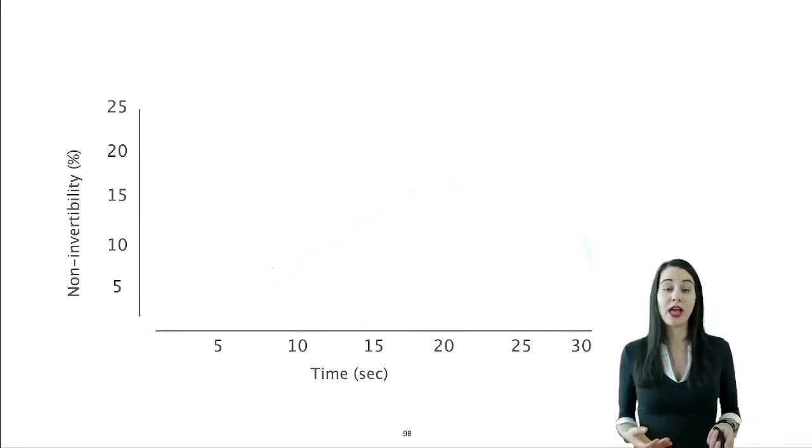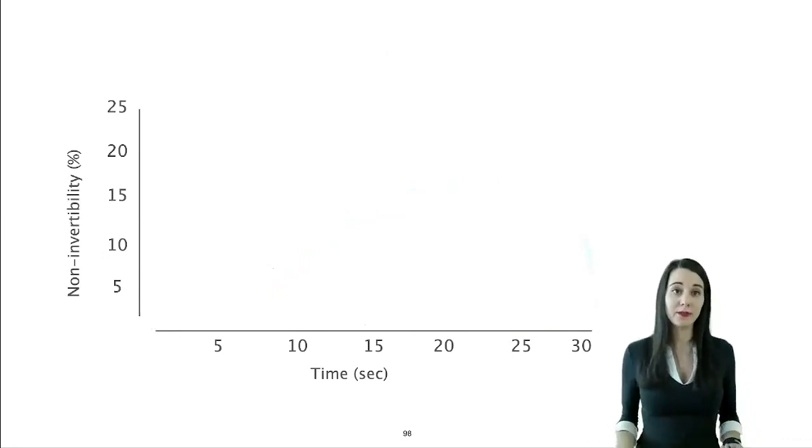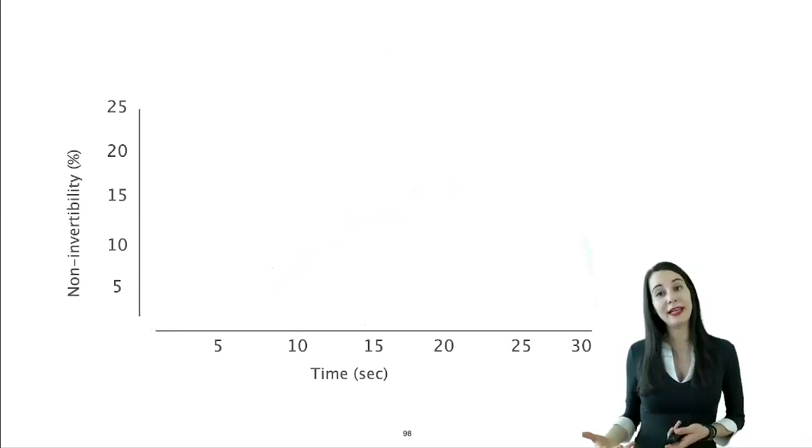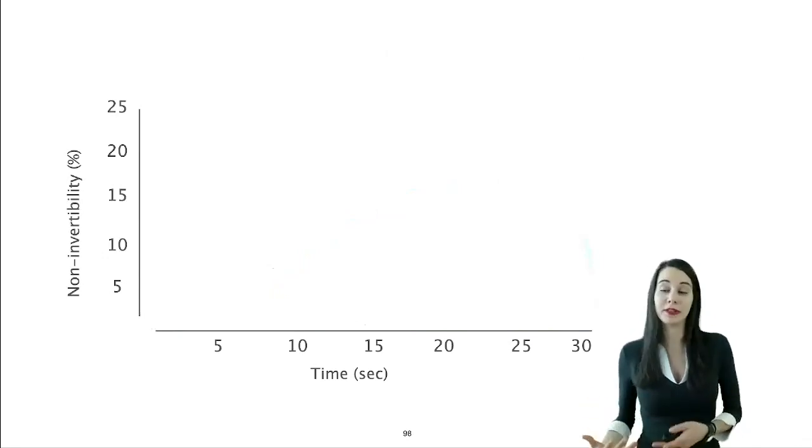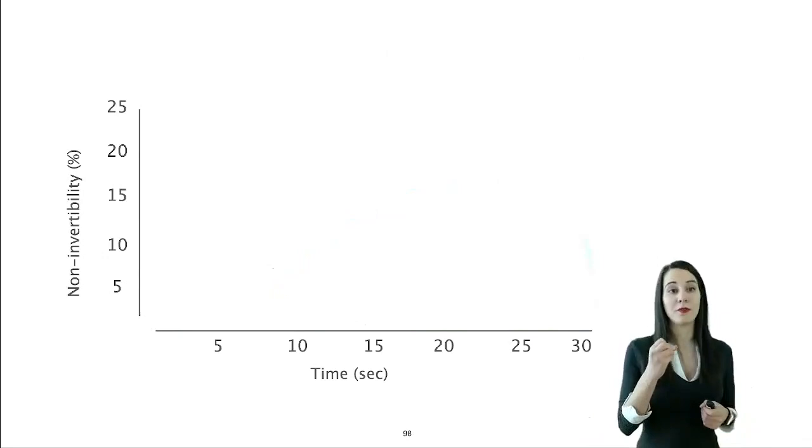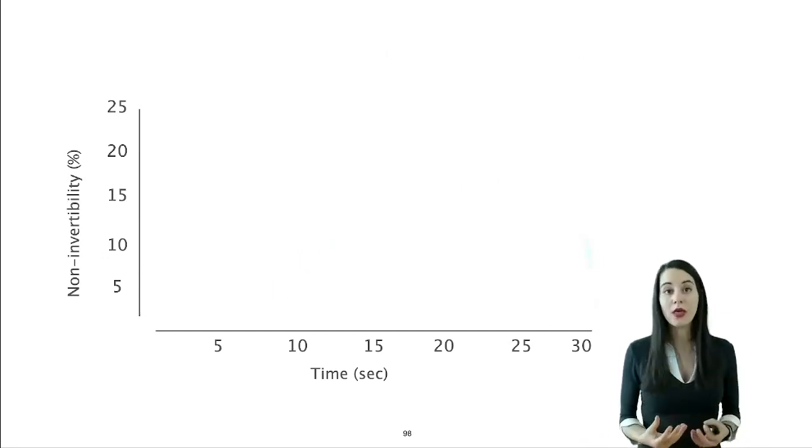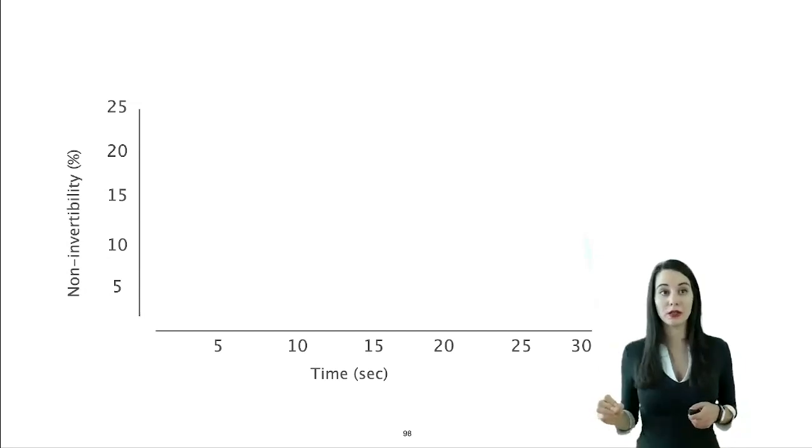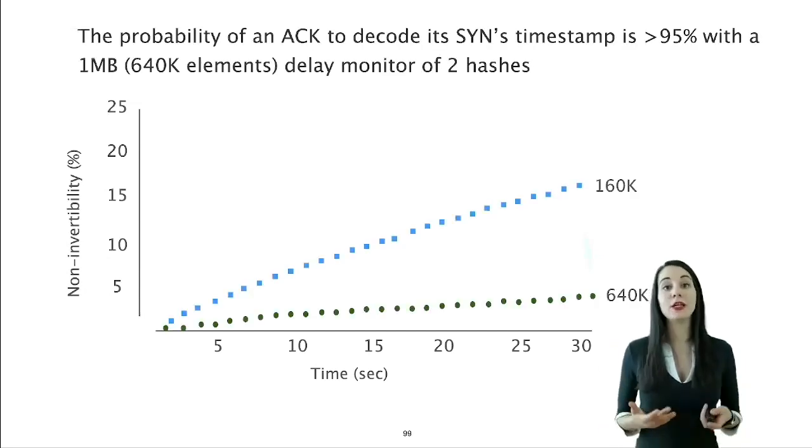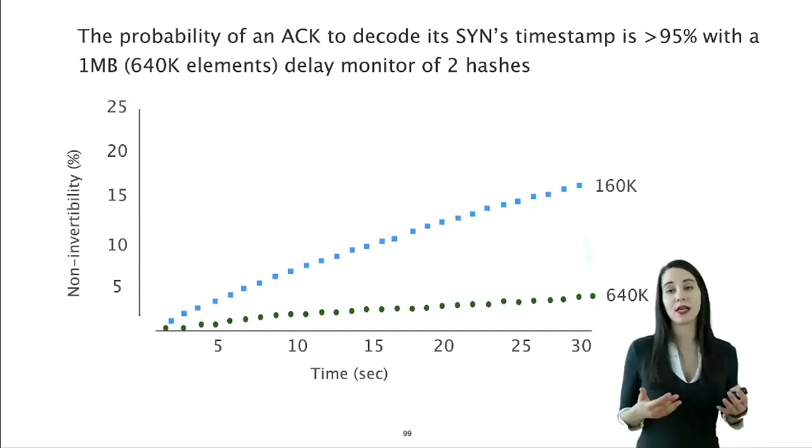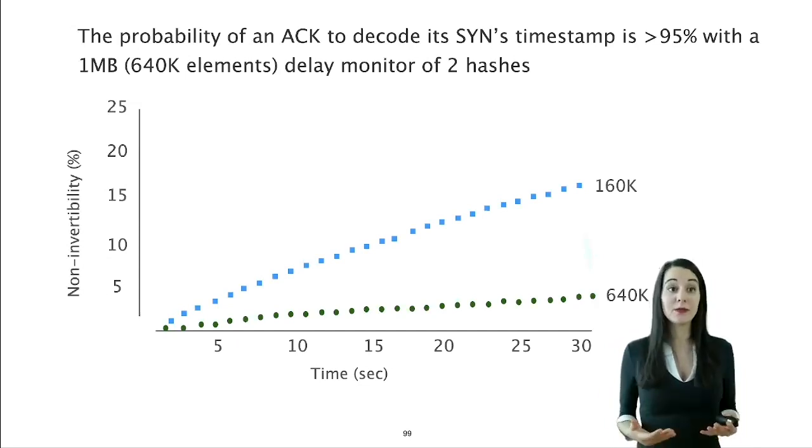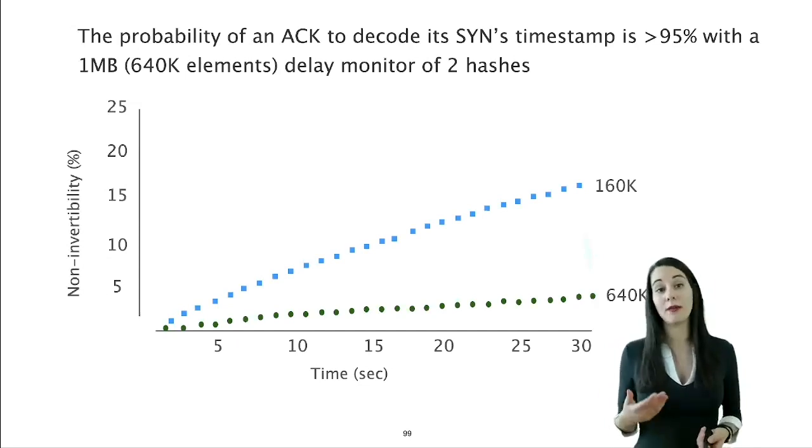Similarly, in this graph, I have plotted the non-invertibility, namely the probability of the computation of the delay monitor to fail. The delay monitor will fail to measure the delay of the particular flow if, upon arrival of the first ACK of this flow, there is no index that contains only the timestamp of the corresponding SYN. We observe that the probability of such a failure is less than 5% for a delay monitor of 640k elements. Such a monitor would need less than 1 megabyte of SRAM.